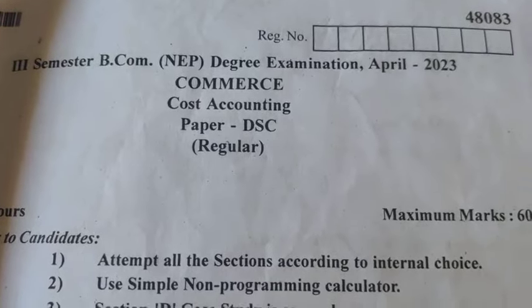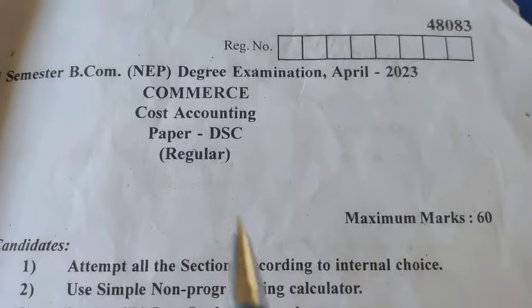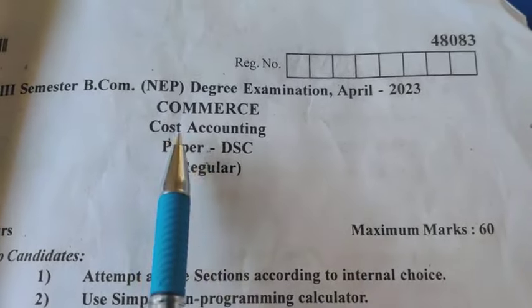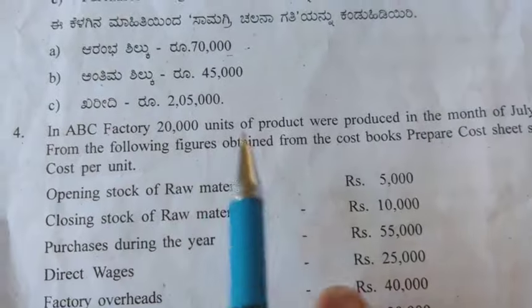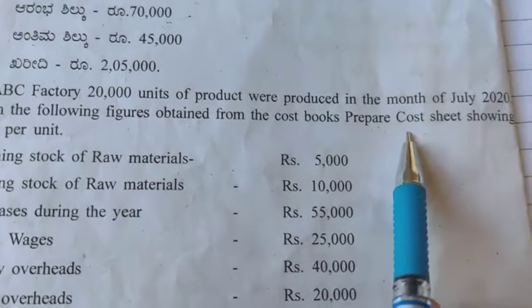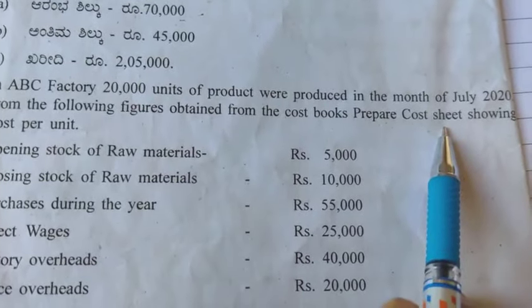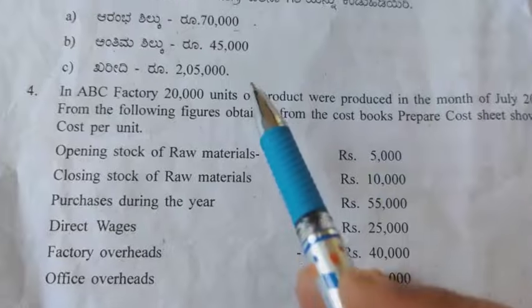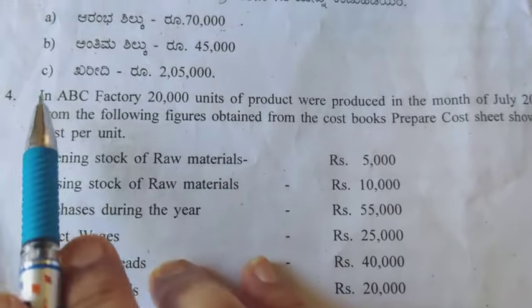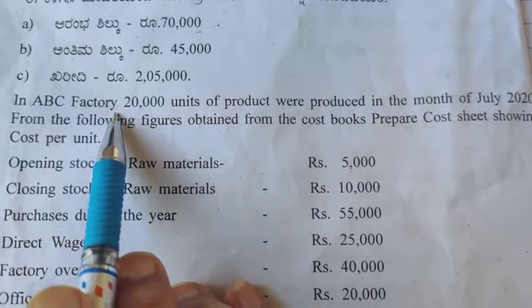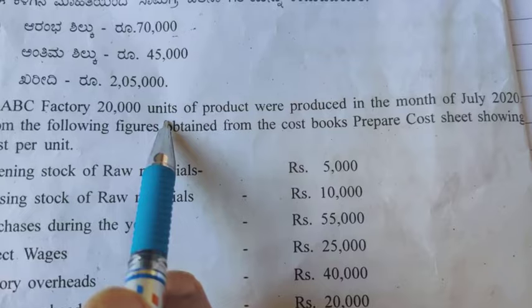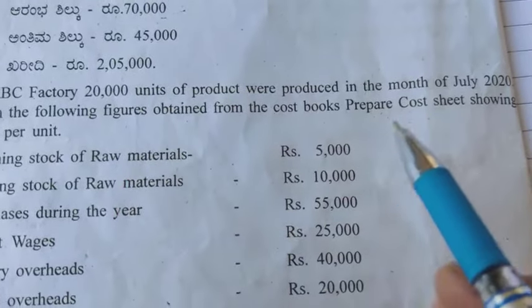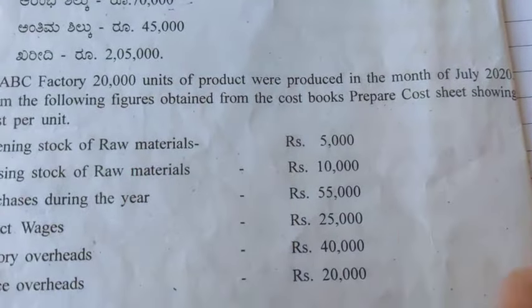Hello students, welcome back. Again, section B question number 4, which is on preparation of cost sheet. Details are given for the ABC factory. Number of units produced is 20,000 units. You have to prepare the cost sheet.